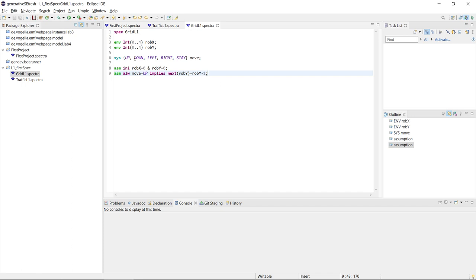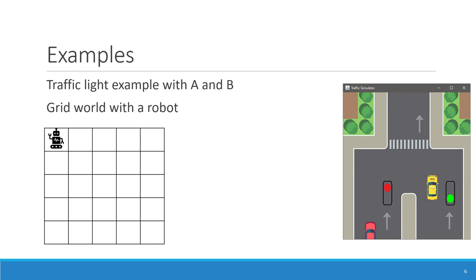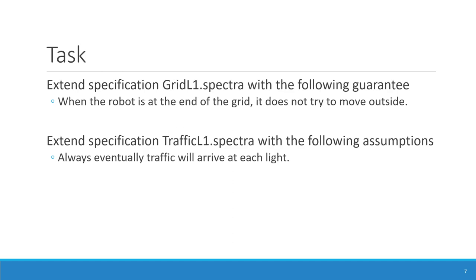We would need similar assumptions for the other move directions to ensure the robot moves correctly — assumptions that when the robot moves, the environment ensures it ends up in the right grid cell. This is a brief overview of the different variable types: boolean, bounded integers, and enumerations. Now there is a task for you: extend specification gridL1 with a guarantee that when the robot is at the edge of the grid it does not try to move outside. Also extend the traffic light specification with the assumption that always eventually traffic will arrive at each light.